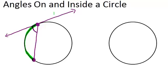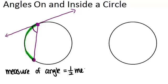And the relationship between the angle and the arc is that the measure of the angle equals half the measure of the arc.